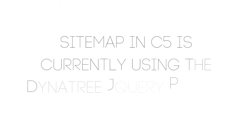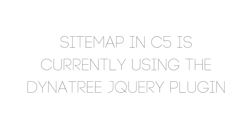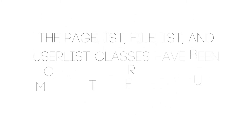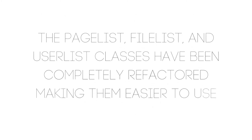Sorry about that rant, let's get back to what we're here to do today. The sitemap in Concrete 5 is currently using the Dynatree jQuery plugin but they will be moving to FancyTree in the future because FancyTree is replacing Dynatree. One more important note on the code side is that the page list, file list, and user list classes have been completely refactored and according to the C5 team these classes should be a lot easier to extend.